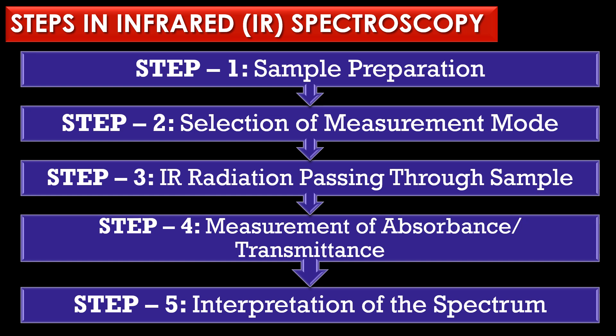The fourth step is measurement of absorbance or transmittance. The detector records the amount of light absorbed by the sample, resulting in a characteristic IR spectrum. Finally, step five is interpretation of the spectrum. Peaks in the IR spectrum correspond to specific vibrational modes of bonds. By comparing these peaks to known reference spectra or functional group frequencies, the chemical structure of the sample can be analyzed.